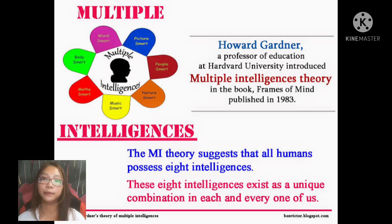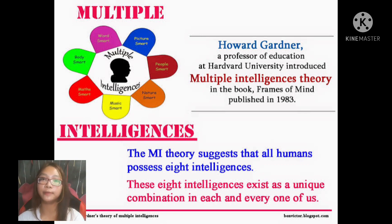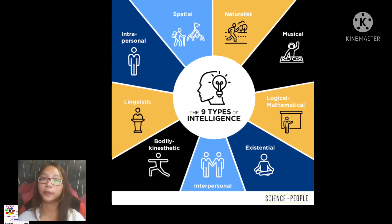Lastly is the Multiple Intelligence theory, first described by Howard Gardner in "Frames of Mind" in 1983. These are the following types.